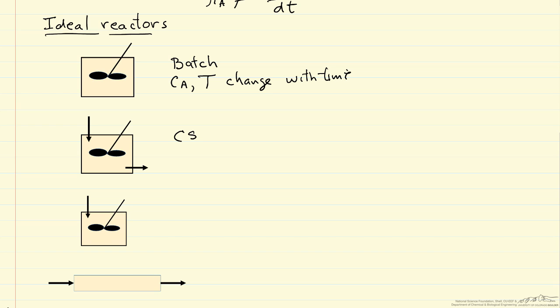Continuous stirred tank reactor looks like a batch reactor where we continuously add and continuously remove material at steady state. That means the concentration and the temperature in the reactor are both constant. They're not changing with time. Derivatives with respect to time are equal to zero because it's steady state.